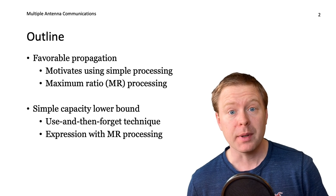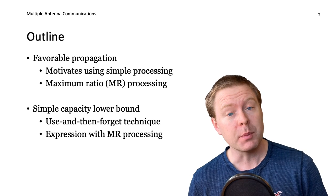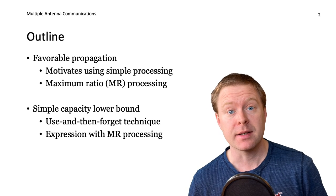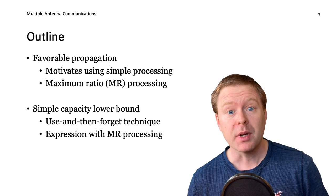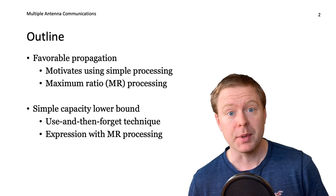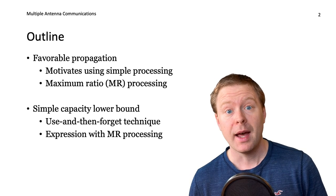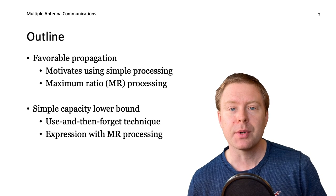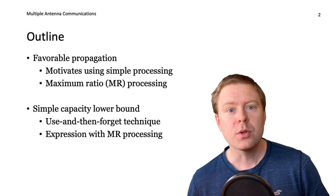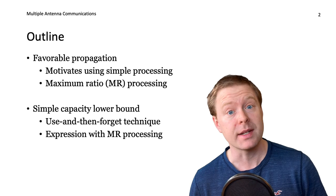This lecture is also about the uplink, but now we will start to simplify things. I will talk about something called favorable propagation, which is a phenomenon appearing when we have many antennas and serve multiple users. That will allow us to use simpler signal processing methods. In particular, we will use maximum ratio or MR processing, even with multiple users, and a simpler capacity lower bound called the use-and-forget technique. We can get a closed-form, very informative expression when using maximum ratio processing along with this capacity bound.